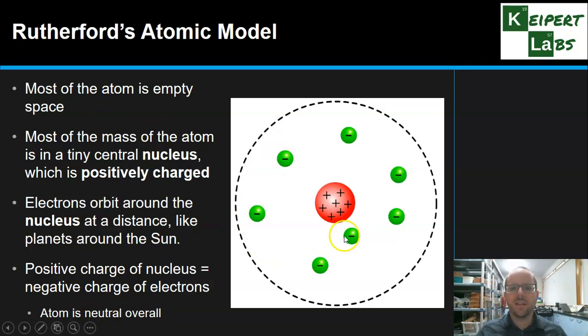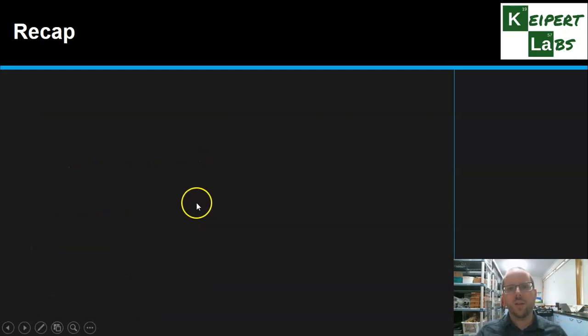If we have seven electrons, we have seven positive charges inside our nucleus so that overall it balances out. So empty space, nucleus which is positively charged, electrons orbiting around the outside. That's Rutherford's atomic model.